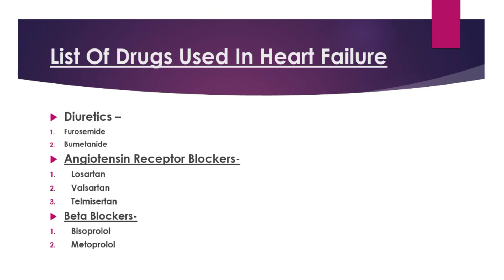The next drug class is beta blockers. Examples of drugs are bisoprolol and metoprolol. The action of these drugs is to limit the effects of epinephrine or adrenaline hormone. That is why it slows the heart rate, reduces blood pressure, and improves blood flow.